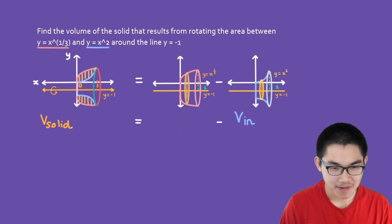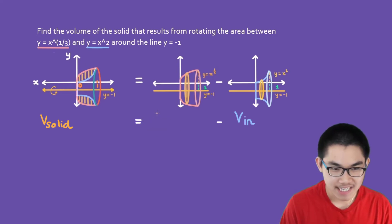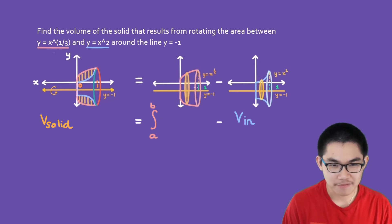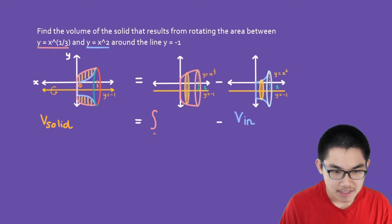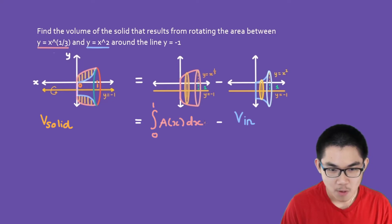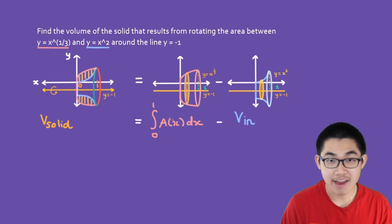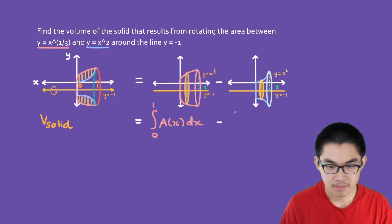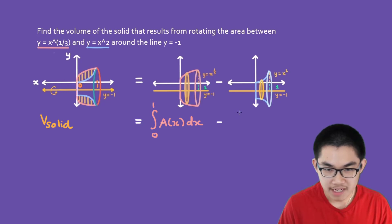What is the formula for the volume of solids? It's basically the integral from a to b, but in this case we just want to find the volume from 0 to 1. So that's going to be the integral from 0 to 1 of A(x) dx, where A(x) is the area of the circular cross section. For the volume of the inner function, it is the same thing — 0 to 1 of A(x) dx.